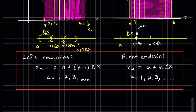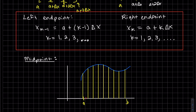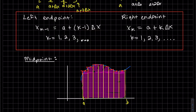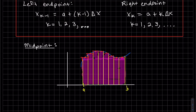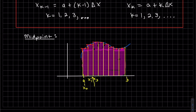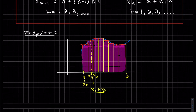For the midpoint approximation, we use the point in between — the midpoint of each interval — go straight across, and that midpoint value is the height of the rectangle. To find the midpoint, we take the average: add the two endpoints and divide by two.